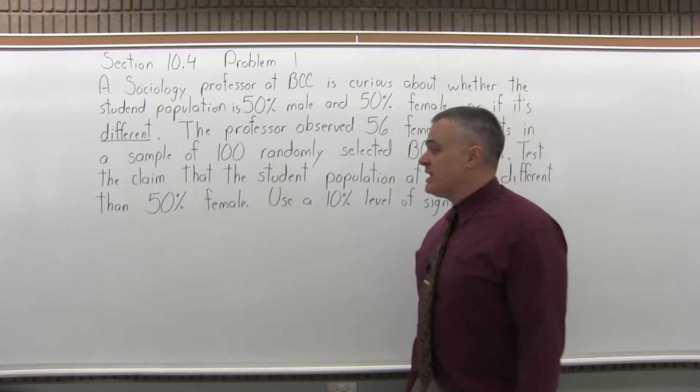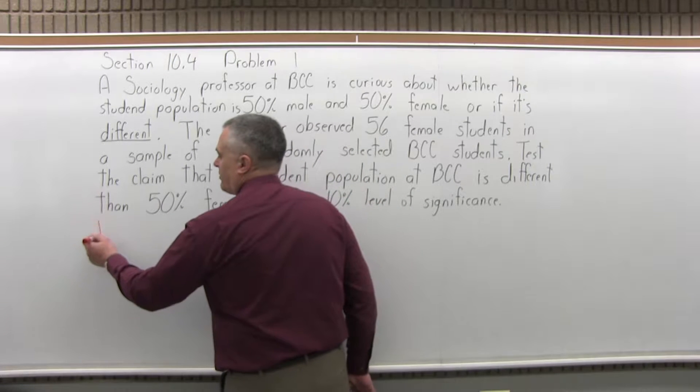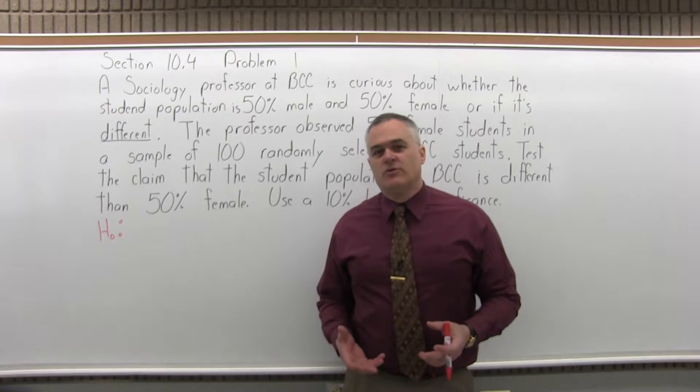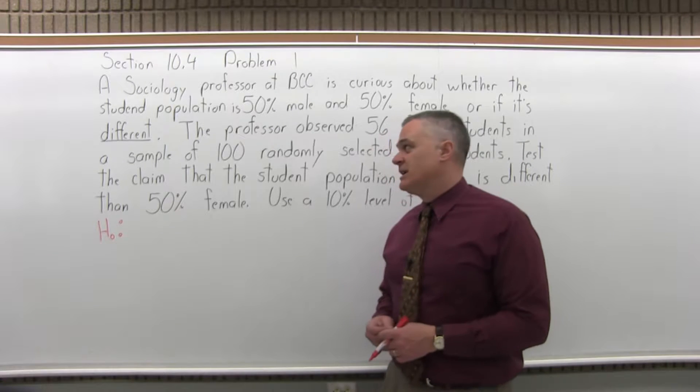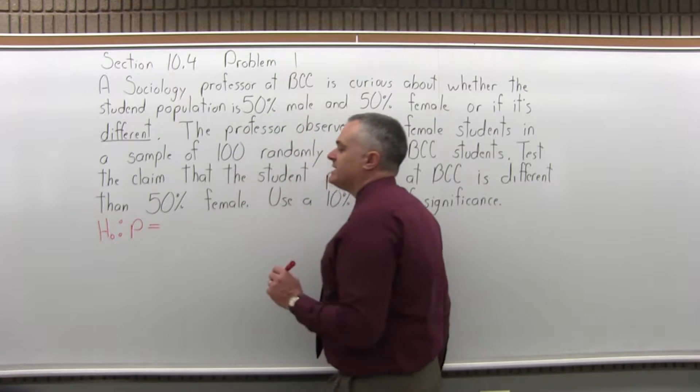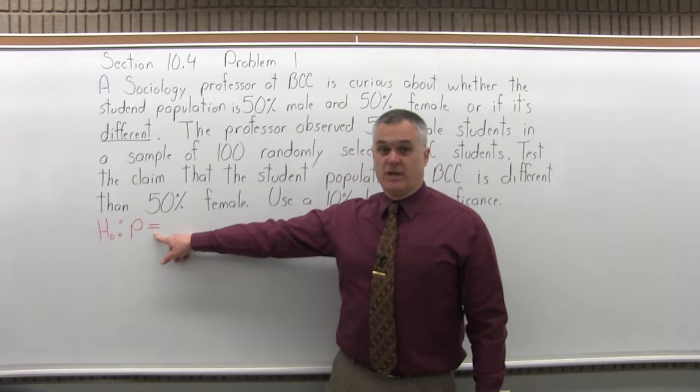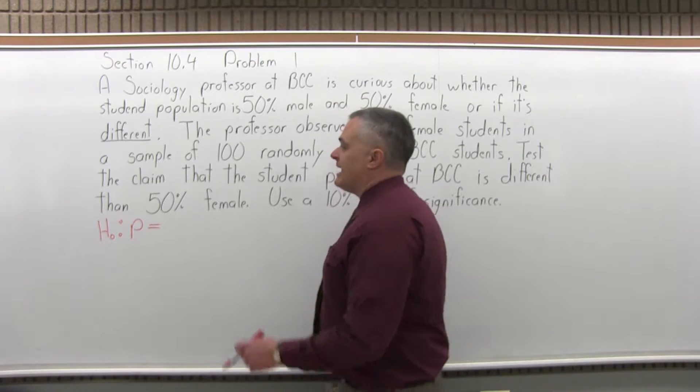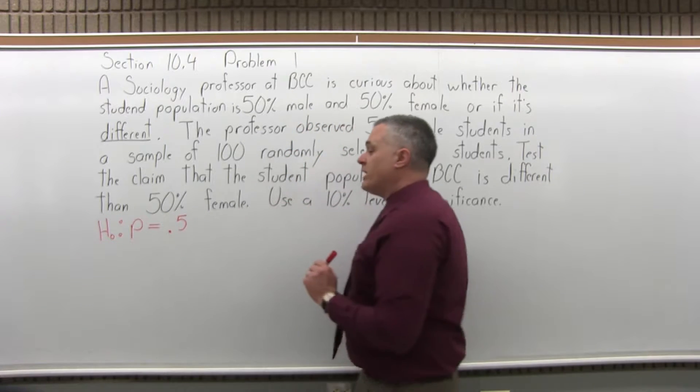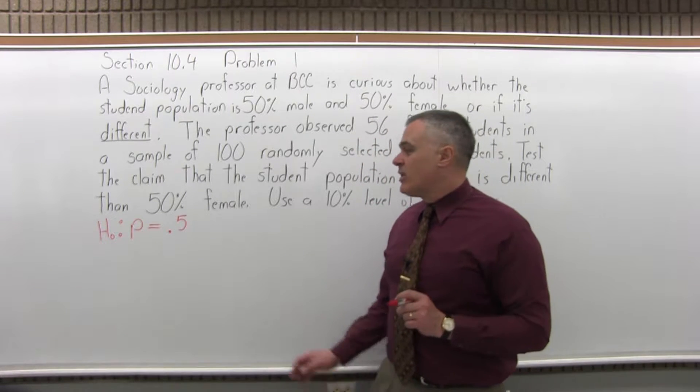So this is a hypothesis test. Step one is write the null hypothesis. The symbol for null hypothesis is a capital H with a subscript of zero. Typically in the null hypothesis you have the symbol mu for population mean, but we are testing a population proportion, so it will be P. The null hypothesis always has the condition of equality, so it could be an equal to, a less than or equal to, or a greater than or equal to. What we want to test is that the proportion is 50%, but we need to write that as a decimal. So it's 0.50 or just 0.5.